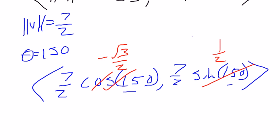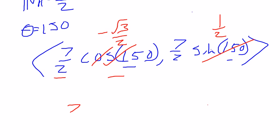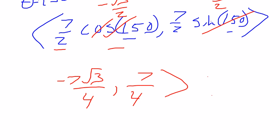So if I multiply 7 halves times negative square root of 3 over 2, I get negative 7 square root of 3 over 4, and I get 7 over 4. So this would be your answer.